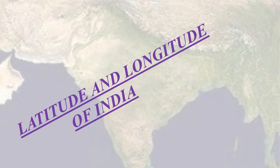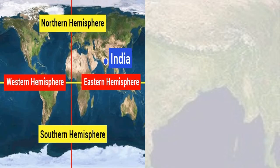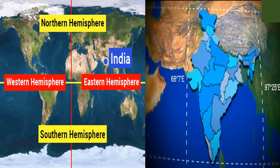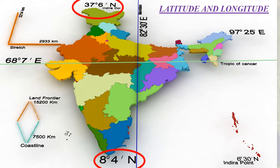Now we will learn about location and extent. India lies entirely in the northern and eastern hemispheres. It extends from 8 degrees 4 minutes north to 37 degrees 6 minutes north latitudes and 68 degrees 7 minutes east to 97 degrees 25 minutes east longitudes. The Tropic of Cancer passes right through India, dividing it into two parts. The 82.5 degree east longitude passes through Allahabad and is the standard meridian for India.